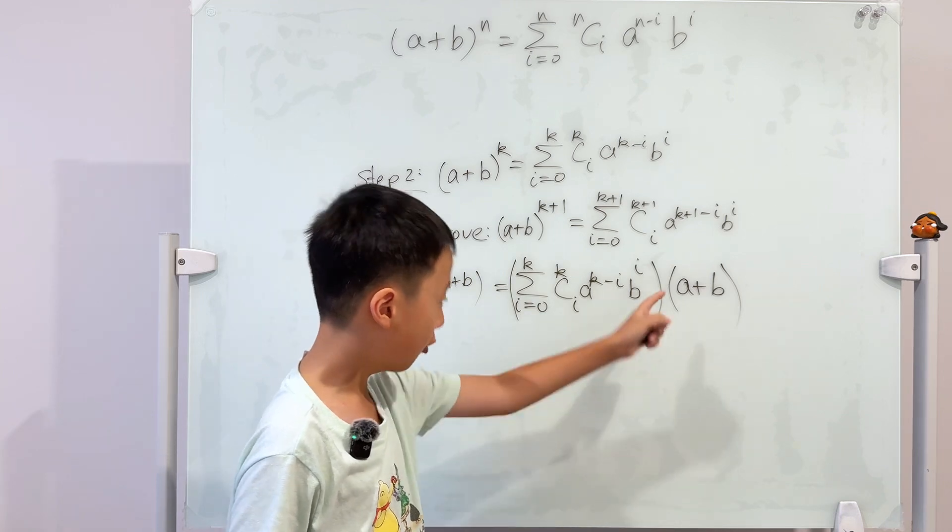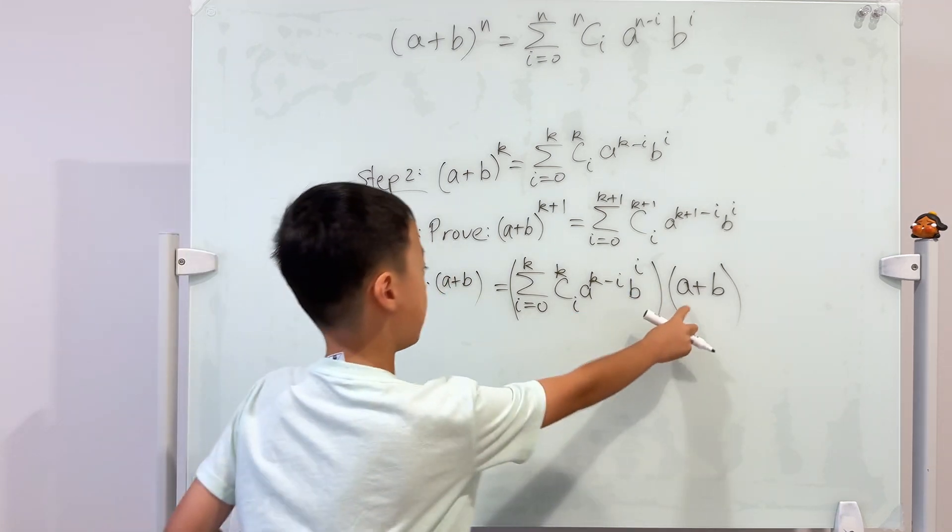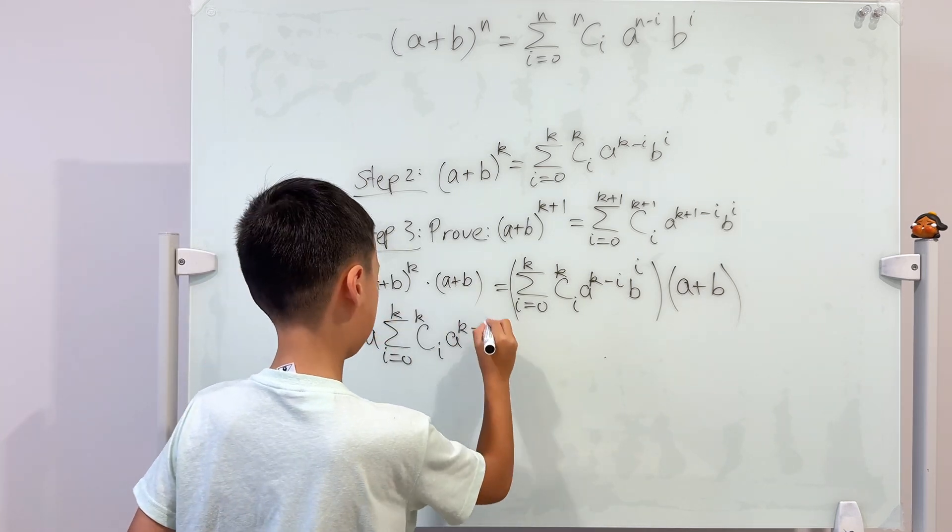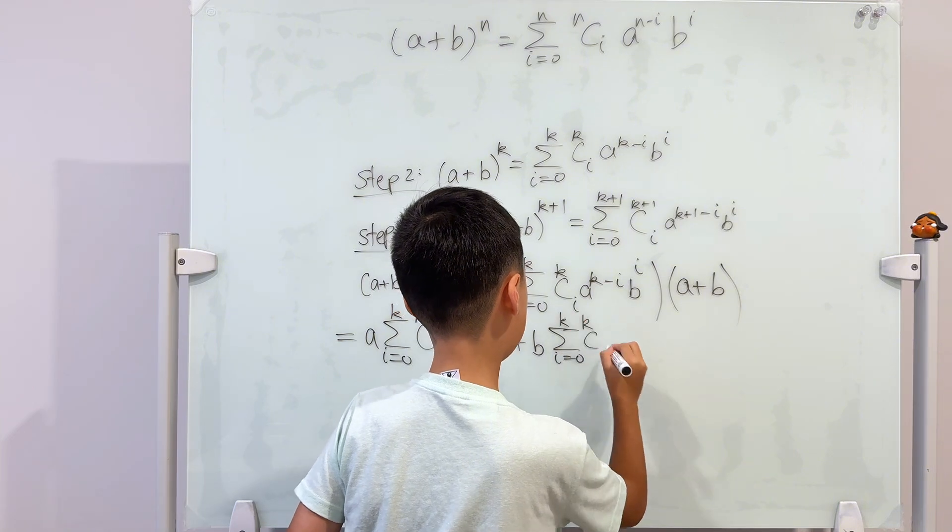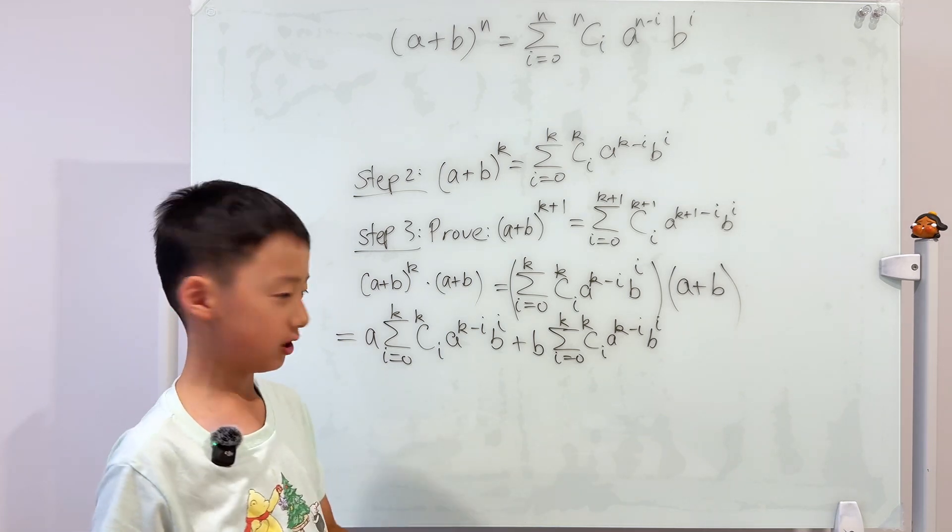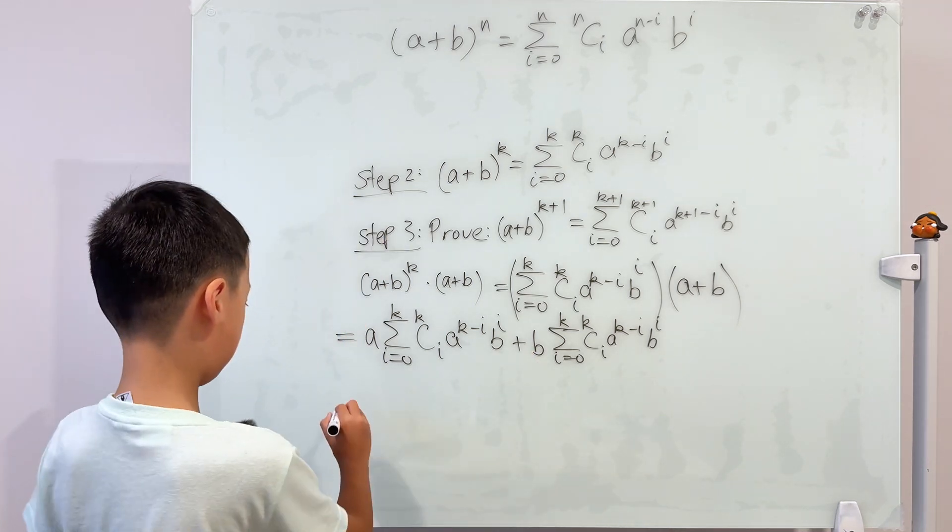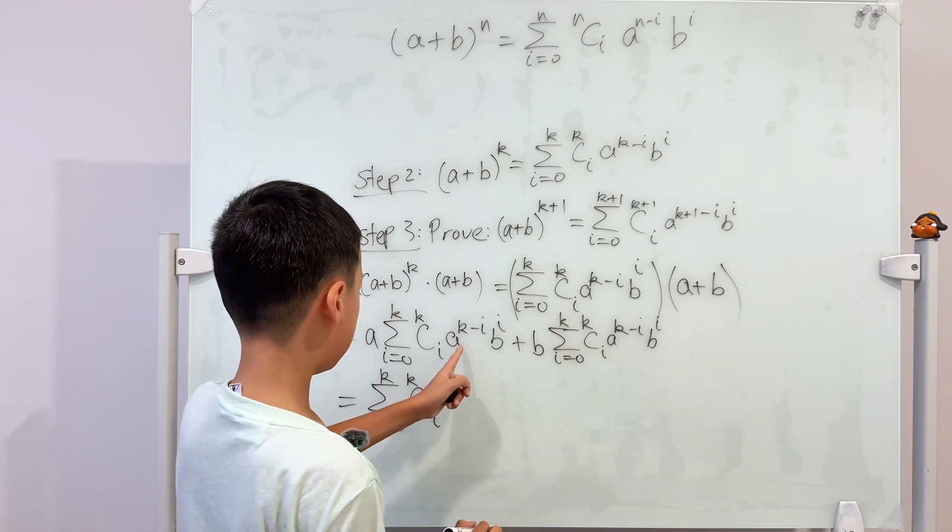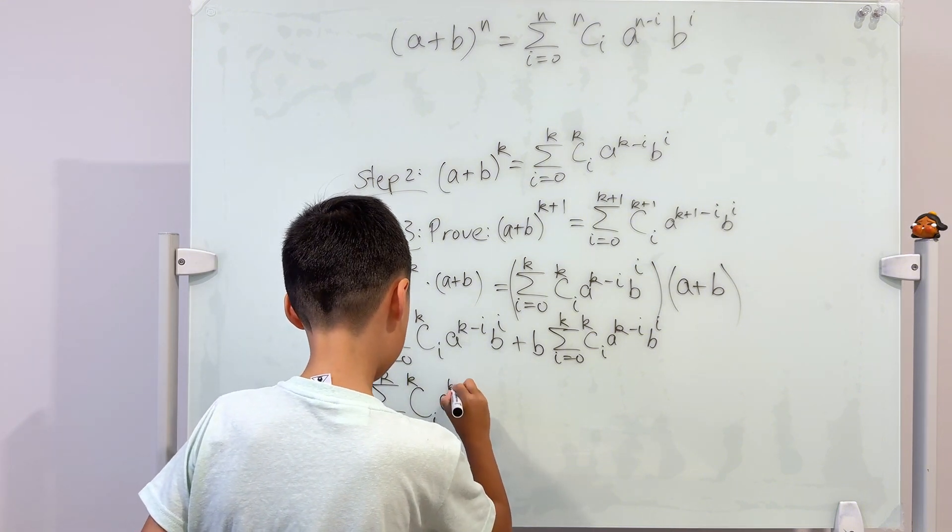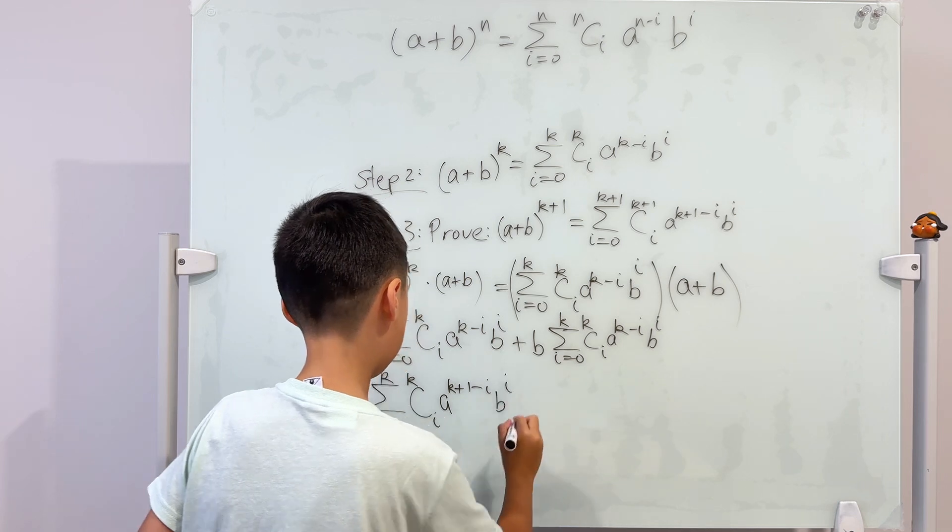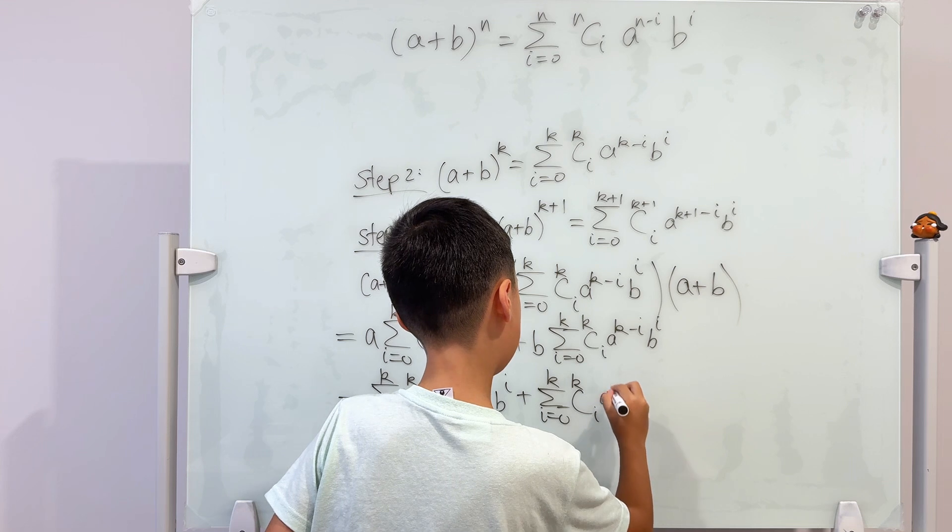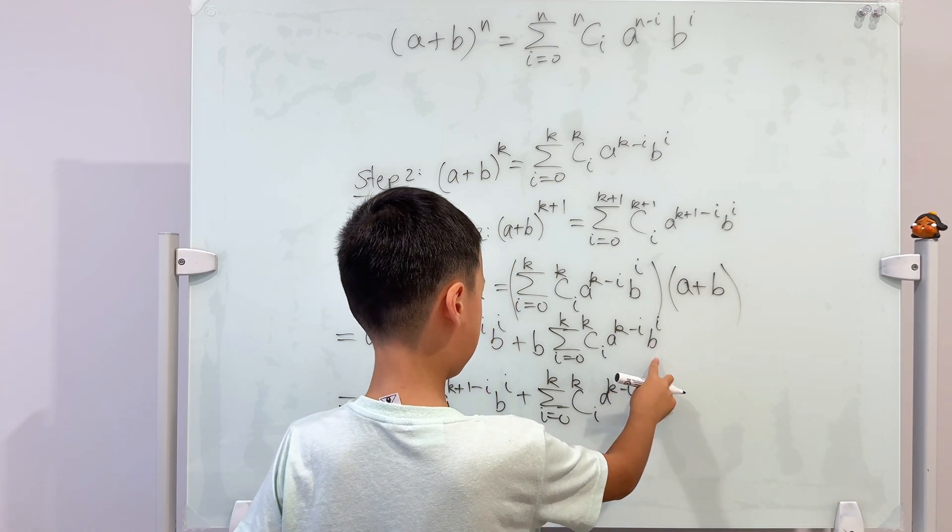And from here we can open the brackets to get a times this plus b times this. And now we can multiply the a into here and similarly we can multiply the b in here. This will now become a to the power of k plus one minus i. And this will stay the same. This will stay the same. And this will become b to the power of i plus one.